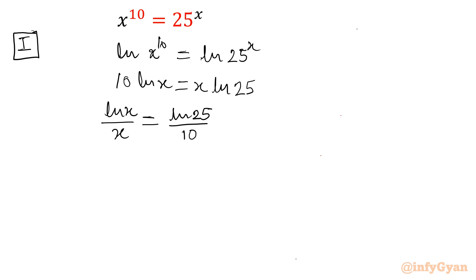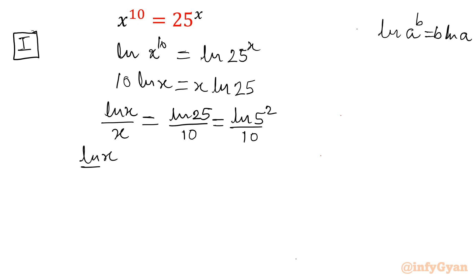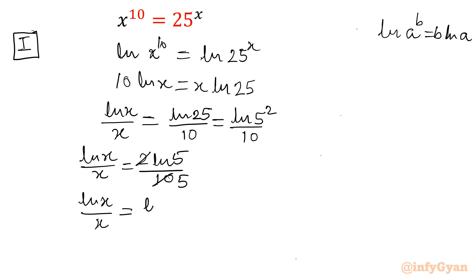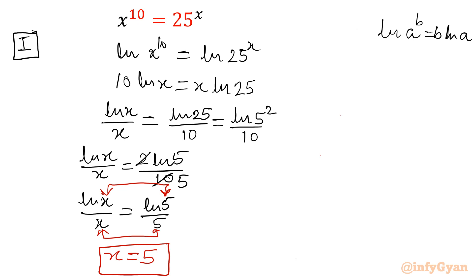Now, ln 25 can be written as ln 5 squared over 10. Using the property ln a power b equals b ln a, it becomes 2 ln 5 over 10. Cancelling 10 by 5, we get ln x over x equal to ln 5 over 5. Comparing both sides, it is visible that x equal to 5 is our solution. This is Method 1 using logarithms.